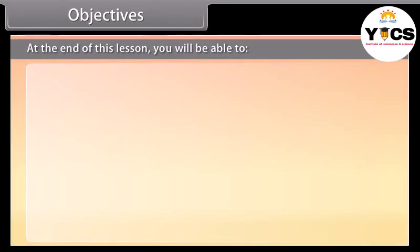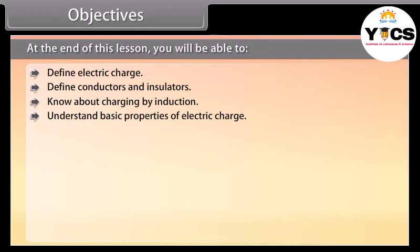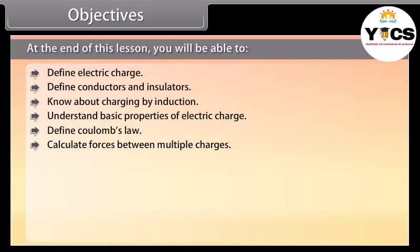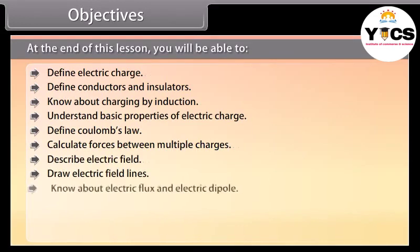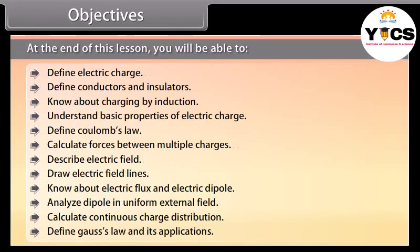Objectives: At the end of this lesson, you'll be able to define electric charge; define conductors and insulators; know about charging by induction; understand basic properties of electric charge; define Coulomb's law; calculate forces between multiple charges; describe electric field; draw electric field lines; know about electric flux and electric dipole; analyze a dipole in a uniform external field; calculate continuous charge distribution; and define Gauss's law and its applications.